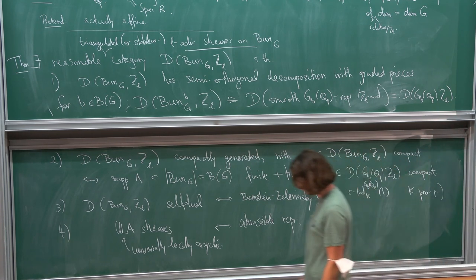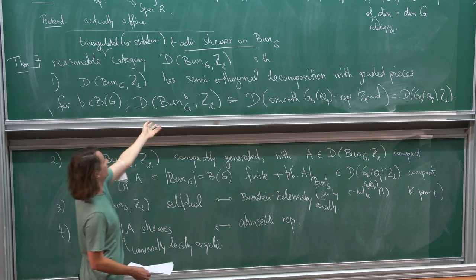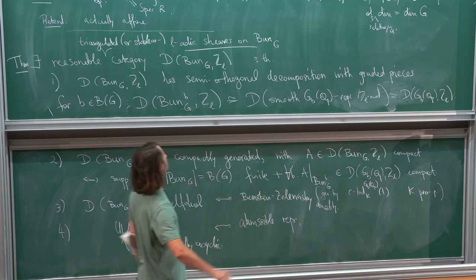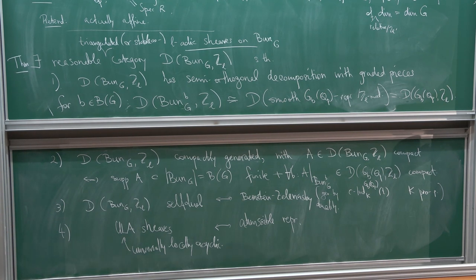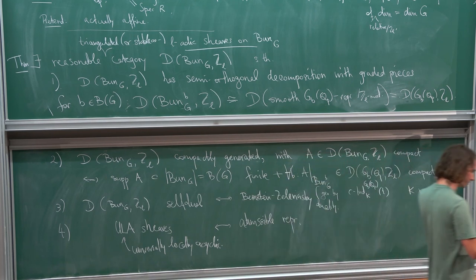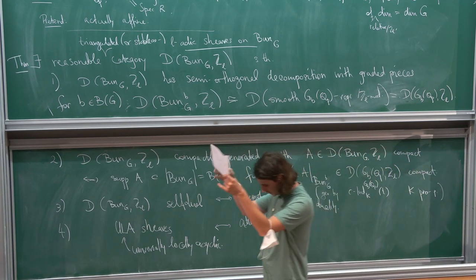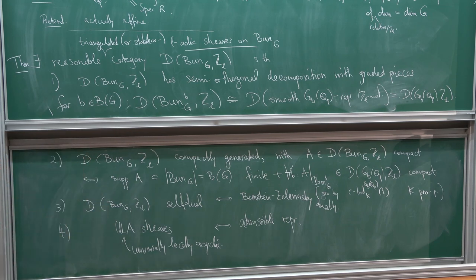So there is a reasonable category that contains all the smooth representations one cares about — not just for G, but for example for all of its extended pure inner forms — and they're all living there together. Many notions from representation theory can be generalized to the setting of Bun_G, so some kind of generalized representation theory setting. One should point out that there's literally a fully faithful functor from the classical representation theory to this geometric setting.